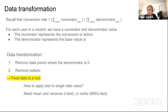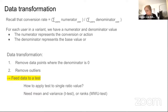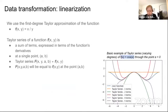The question is how to do this, since you only have a single ratio value. For the t-test you would need the variance, and for the Mann-Whitney U test you need a list of ranked samples. The solution, as is usually done, is something called linearization, which is based on Taylor approximations.